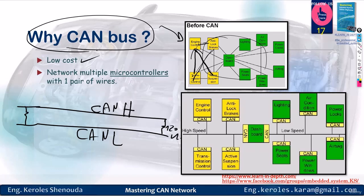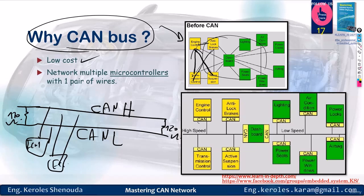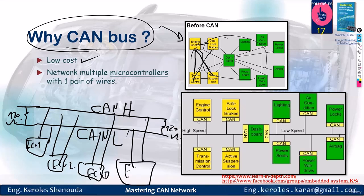With CAN, we've simplified things. Just CAN high and CAN low with a resistance of 120 ohms between them, and that's it. Now you can connect as many electrical control units as you want to these two wires.